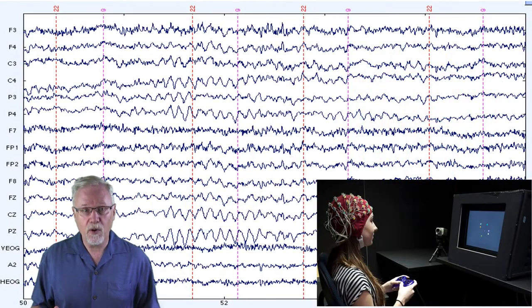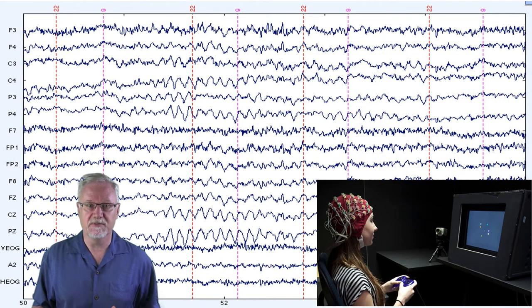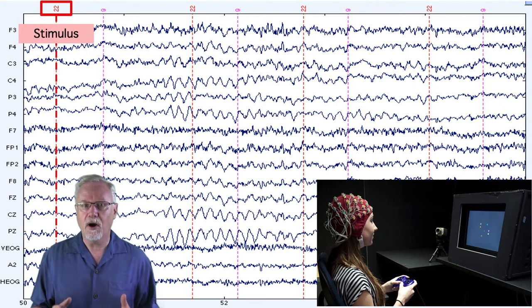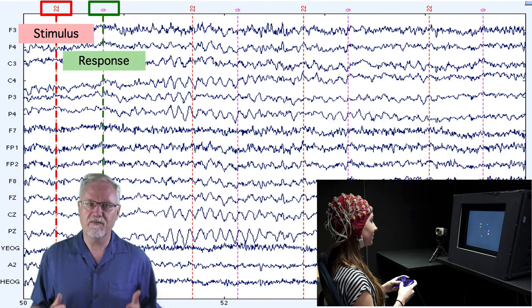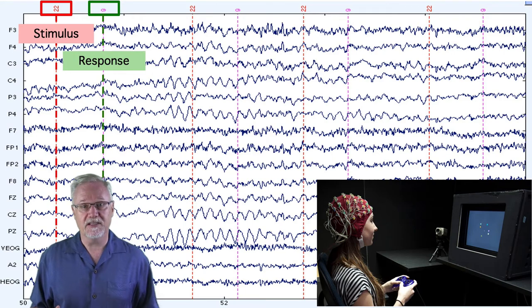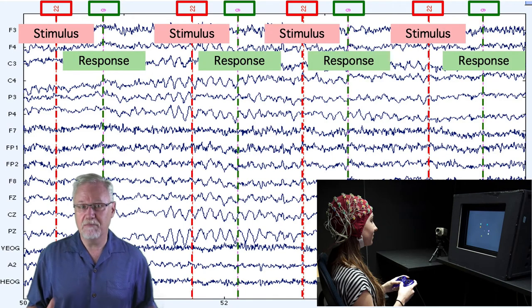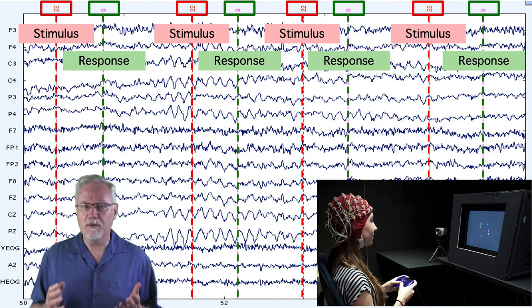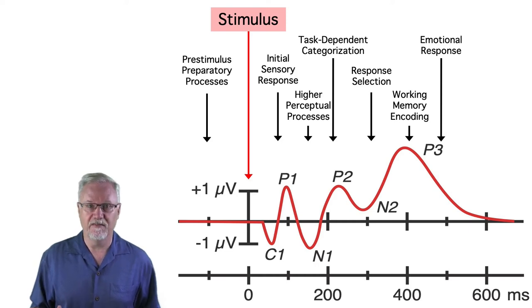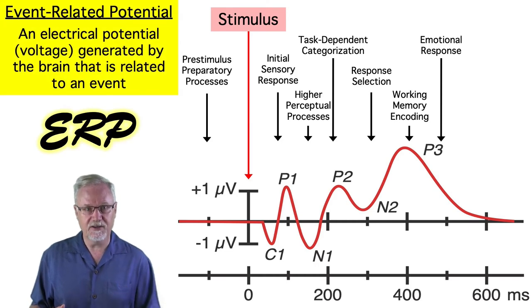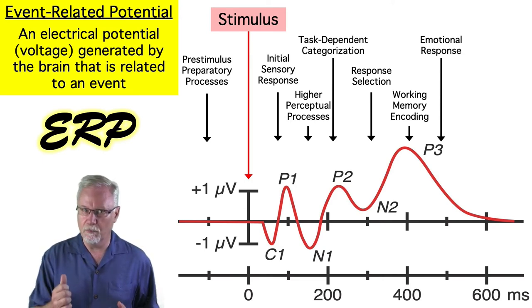However, if we apply a simple set of signal processing operations to the raw EEG, we can pull out portions of the neural activity related to specific sensory, cognitive, affective, and motor processes. To do this, we record the EEG while the subject performs a task. When a stimulus is presented, a marker called an event code is placed in the EEG data file indicating what stimulus was presented and when. We also have event codes for behavioral responses. By using these event codes, we can extract the electrical potentials — the voltages — related to the events. That's what an event-related potential is: a voltage, an electrical potential, related to an event like a picture on a computer screen, a spoken word, or a button press.